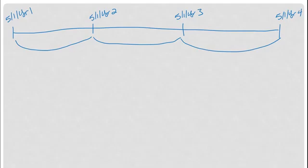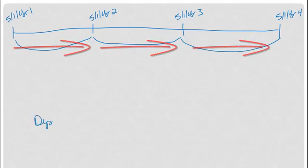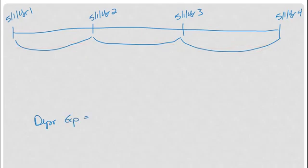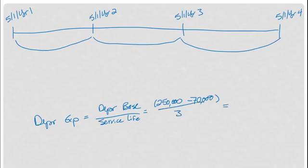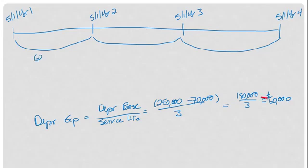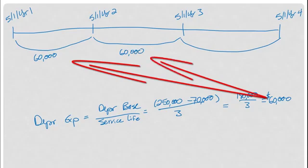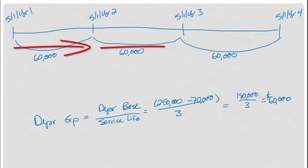Now I can calculate depreciation expense for these three years. Depreciation expense, under straight line, we take our depreciation base and divide by the service life. It's a $250,000 asset, salvage value $70,000, we're going to use it for three years. That's 180,000 over 3, there's our $60,000 depreciation expense. So $60,000 should be depreciated over each of these chunks, from May to May, each of these three years.